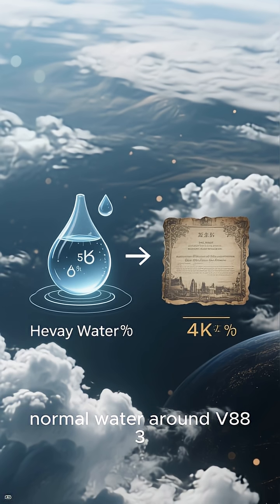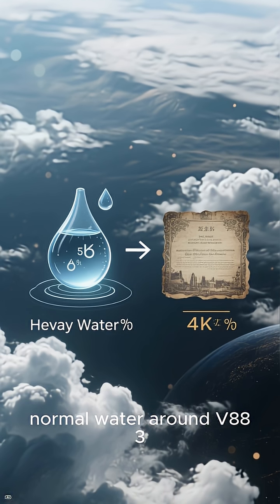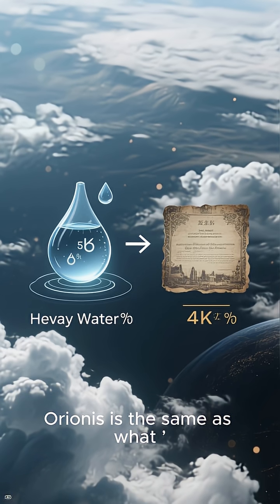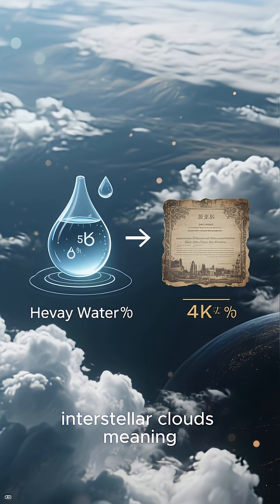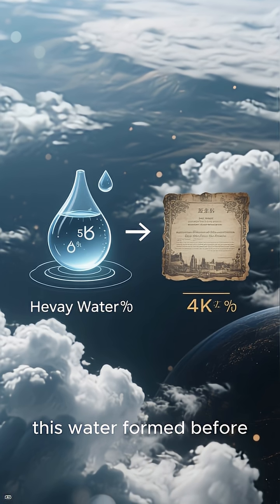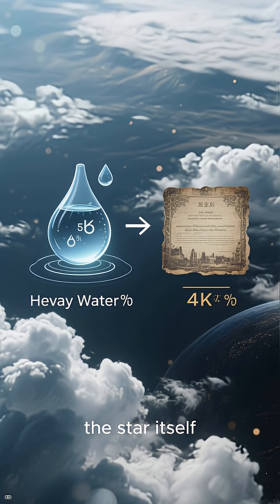The ratio of heavy water to normal water around V883 Orionis is the same as what's found in ancient interstellar clouds, meaning this water formed before the star itself.